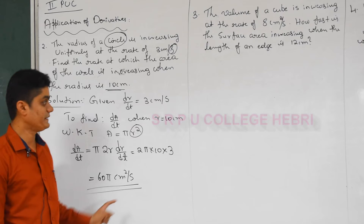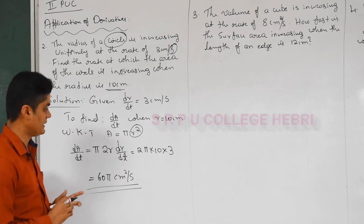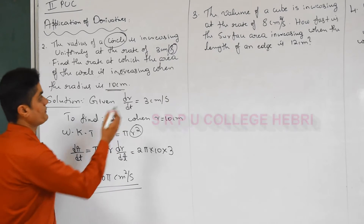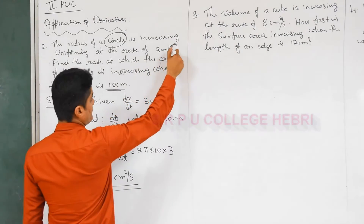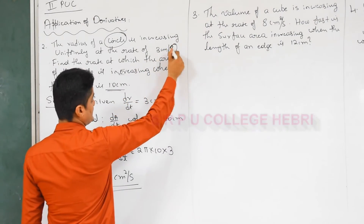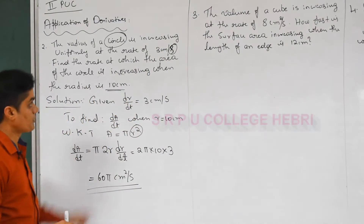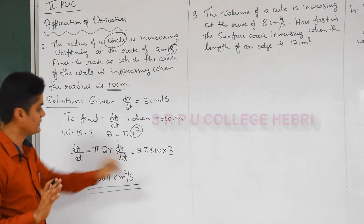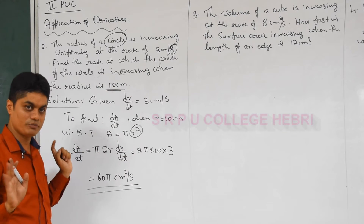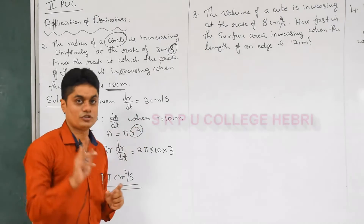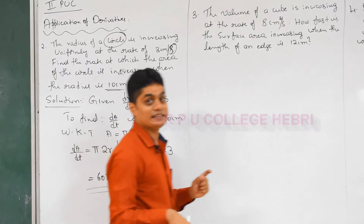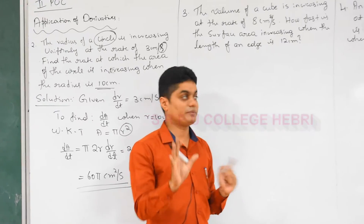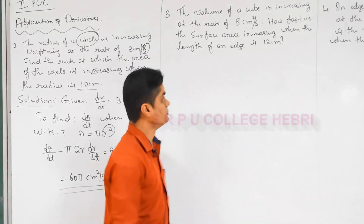That is the answer — 60π cm²/s — a five-mark question. The difference from the previous problem is that we differentiate with respect to time here, whereas the previous was with respect to radius. The method and formula are the same. The first two problems were based on a circle. The next problems are based on a cube, so we will use the cube formula.